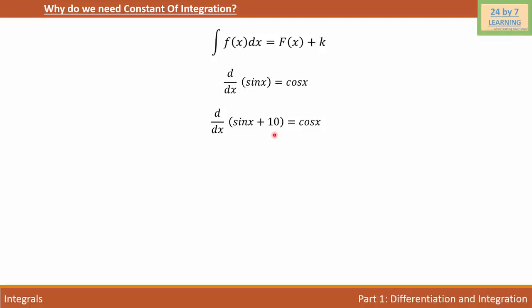To answer that question, let's first integrate cosine x with respect to x. And if I do that, I will write: integration of cosine x dx is equal to sine x plus k, where k is called the constant of integration.